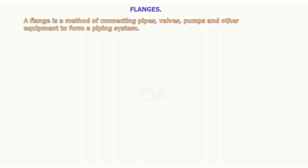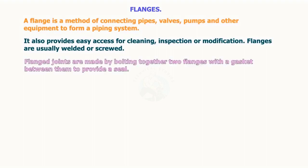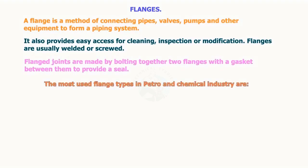A flange is a method of connecting pipes, valves, pumps, and other equipment to form a piping system. It also provides easy access for cleaning, inspection, or modification. Flanges are usually welded or screwed. Flange joints are made by bolting together two flanges with a gasket between them to provide a seal. The most used flange types in the petro and chemical industry are in the following list.